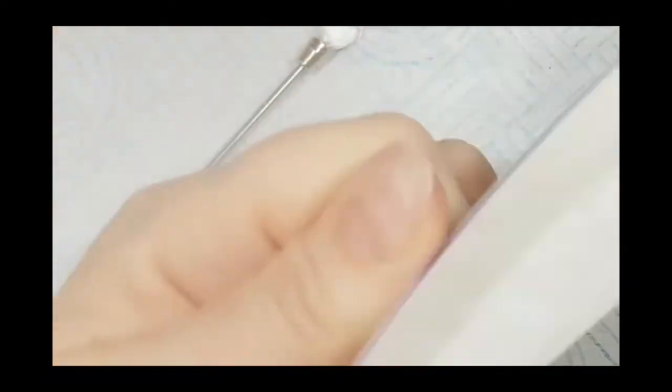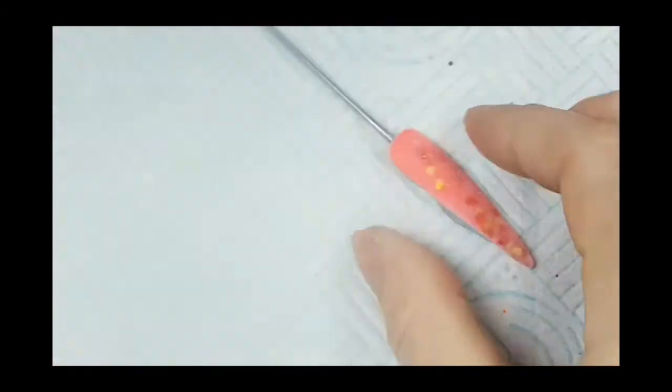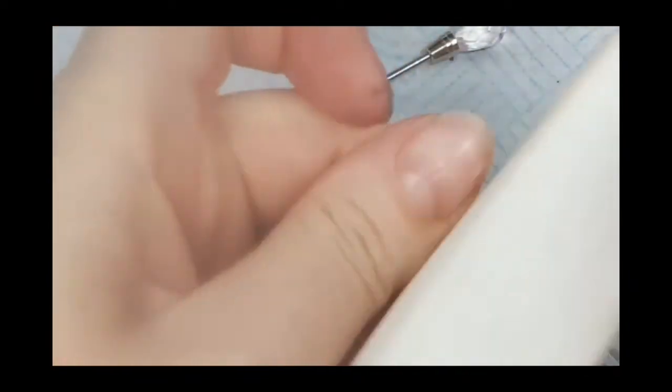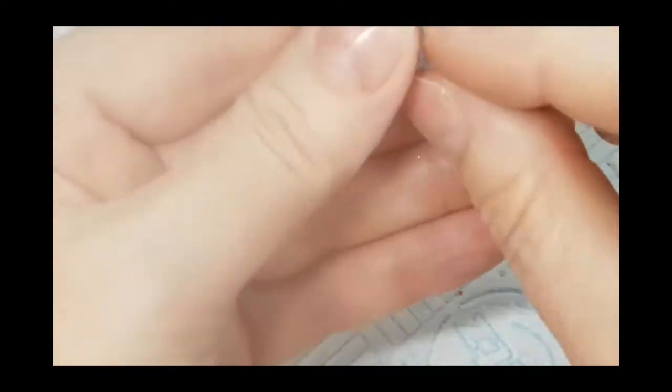Once I'm happy with my filing, I'll be taking a white block and just gently buffing over. All this does is smooth the surface so the paint doesn't get stuck into the ridges. You want your brush to move nice and smoothly against that display tip.